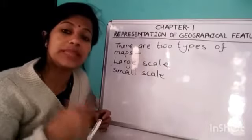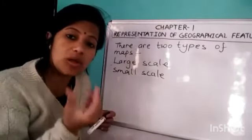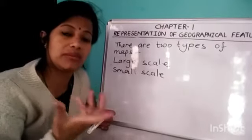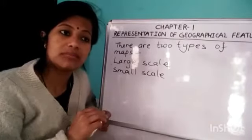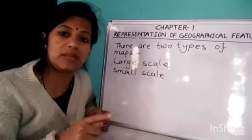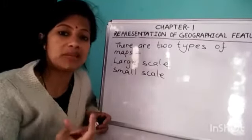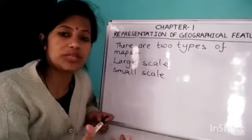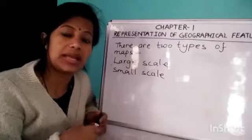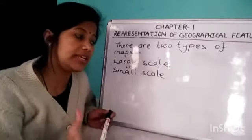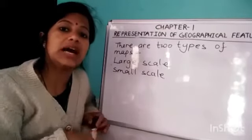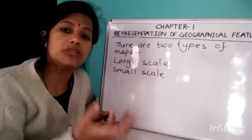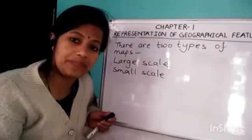Small-scale maps provide a small amount of detail about a large area. For example, a world map — when you see a world map, it is not a large-scale map. A world map is a small-scale map because it gives very little information about a large area. A city guide map, on the other hand, is a large-scale map because it provides large information about a small area.